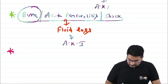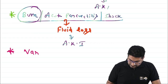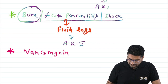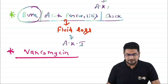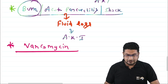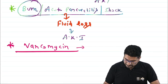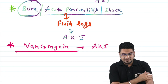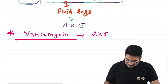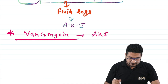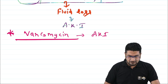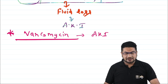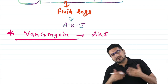Vancomycin, commonly used to treat MRSA, can also damage the tubules and cause AKI.